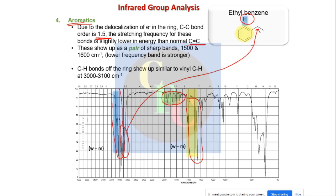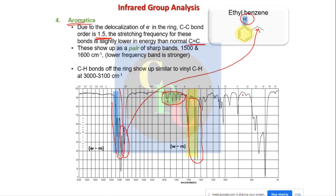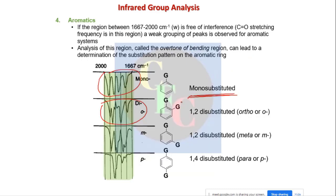For di-substituted benzene — ortho, meta, and para — the position remains almost the same but the shapes are different. By studying this region from 2000 to 1600 cm⁻¹, if these peaks appear we can easily say whether it is di-substituted, poly-substituted, or mono-substituted, and for di-substituted, in which position — ortho, meta, or para.